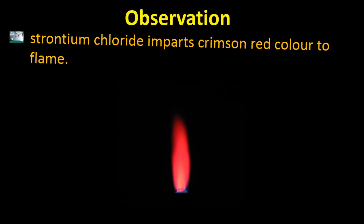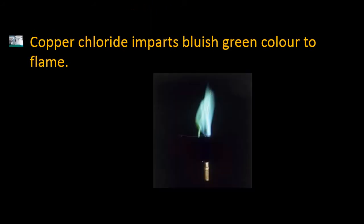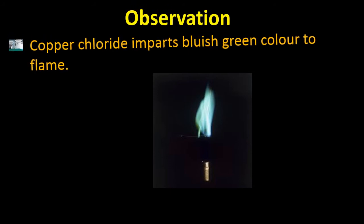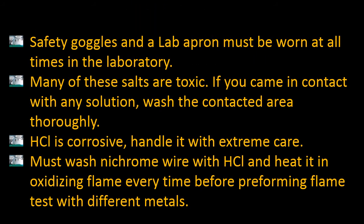Barium chloride imparts a grassy green color to the flame. Copper chloride imparts a bluish green color to the flame, as shown in the picture. You can easily memorize the colors by learning them or observing them with your eyes and ears. Potassium chloride imparts a violet color to the flame. These are all the observations of our practical.